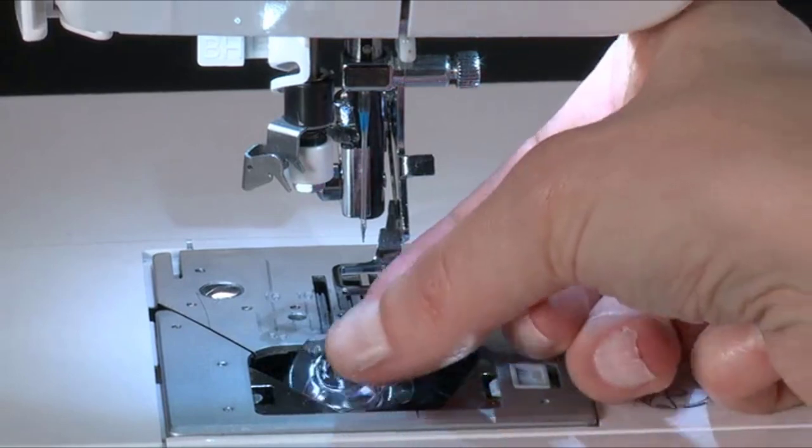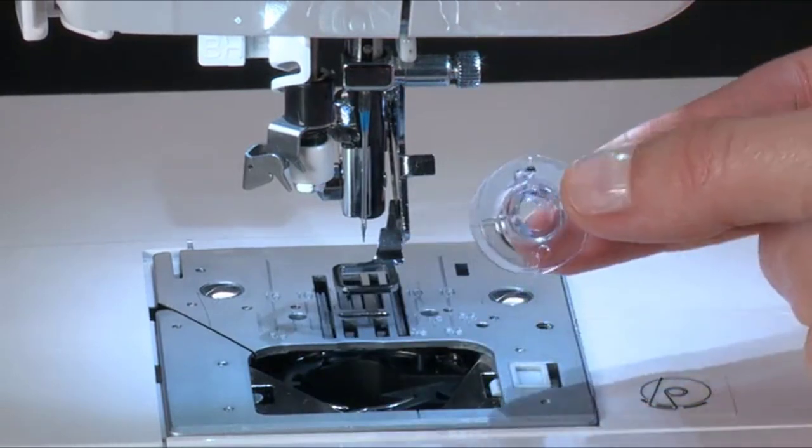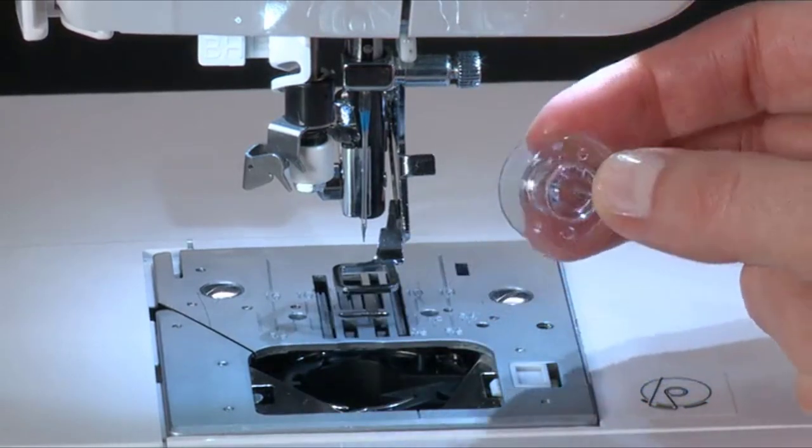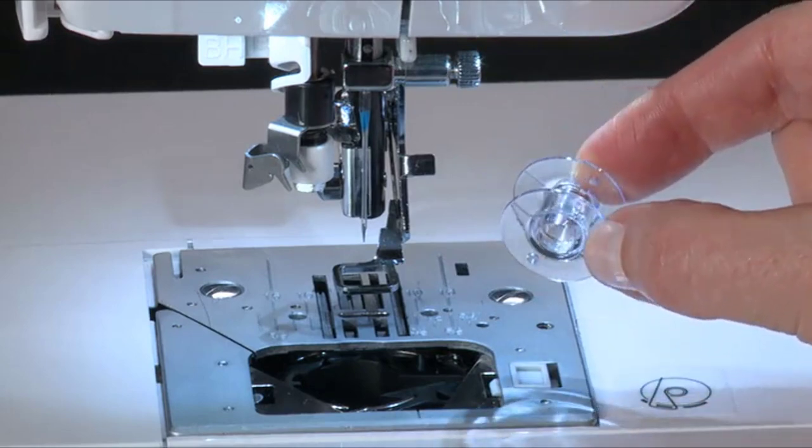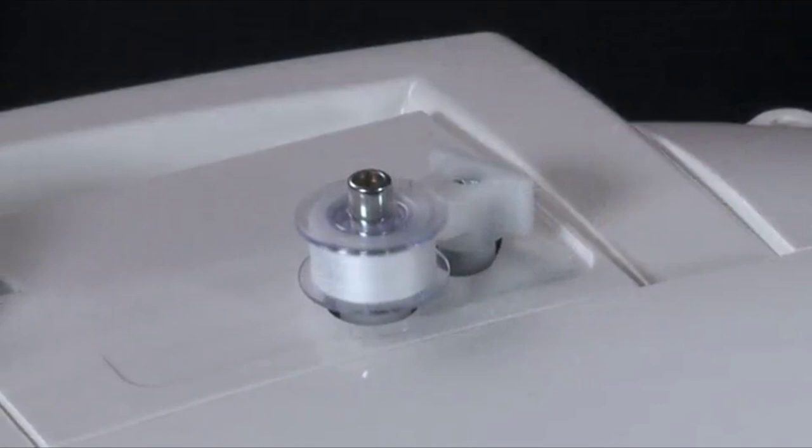Your machine comes with a Class 15J bobbin. It is recommended that you use only Class 15J bobbins in your machine. To wind the bobbin, the machine can either be set up in standard sewing mode or with the embroidery unit attached.